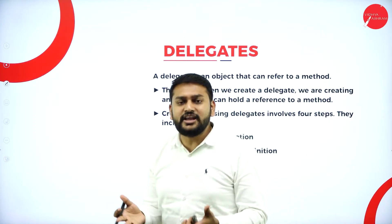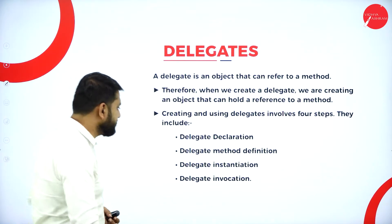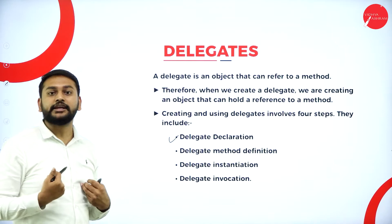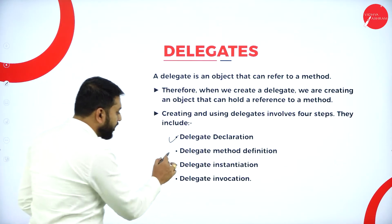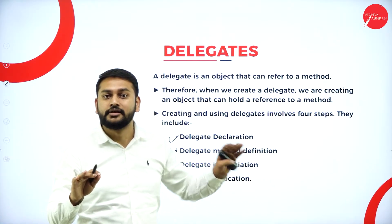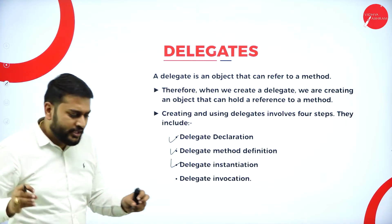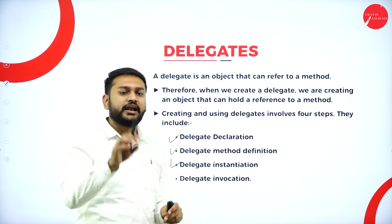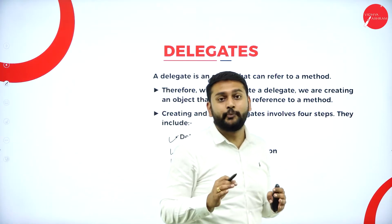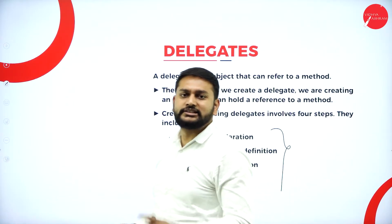How exactly are we creating that? That involves four different steps. The first step is declaration — how do I declare the delegate. Second, I should understand how to define the delegate method. The third thing is delegate instantiation — how do I initialize the delegate. And the fourth is how do I invoke the delegate. If you understand these four steps, you are done with delegates.